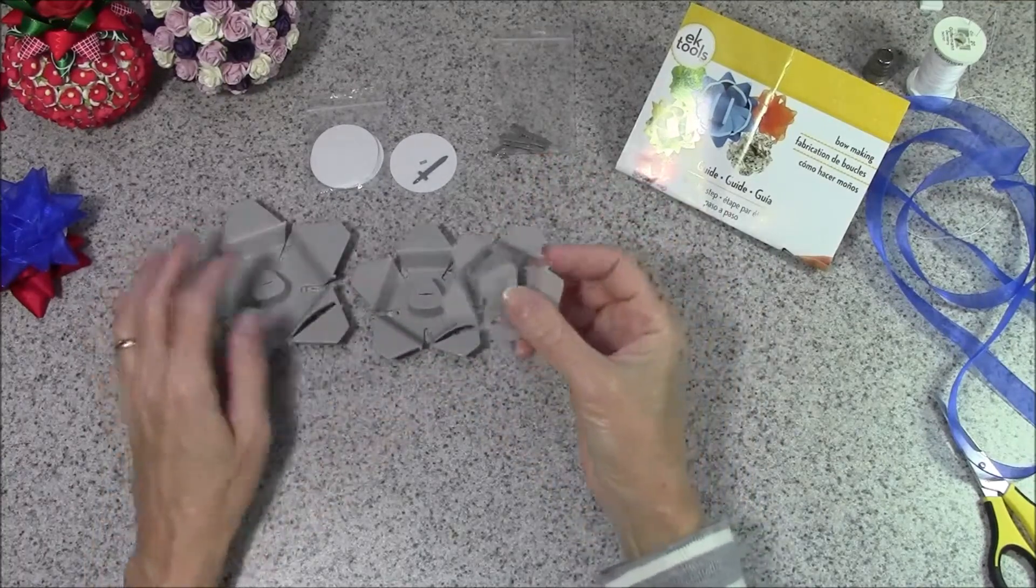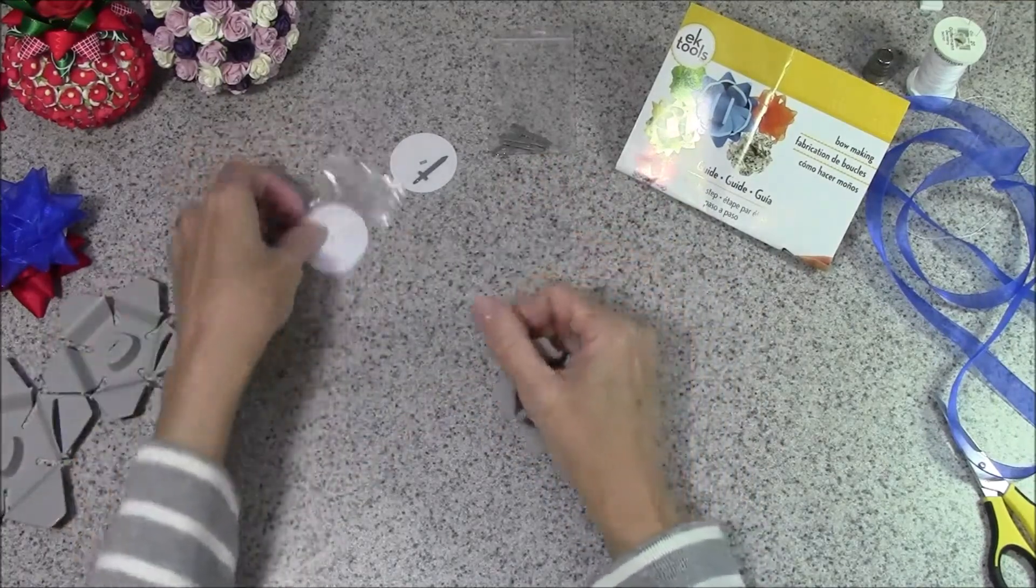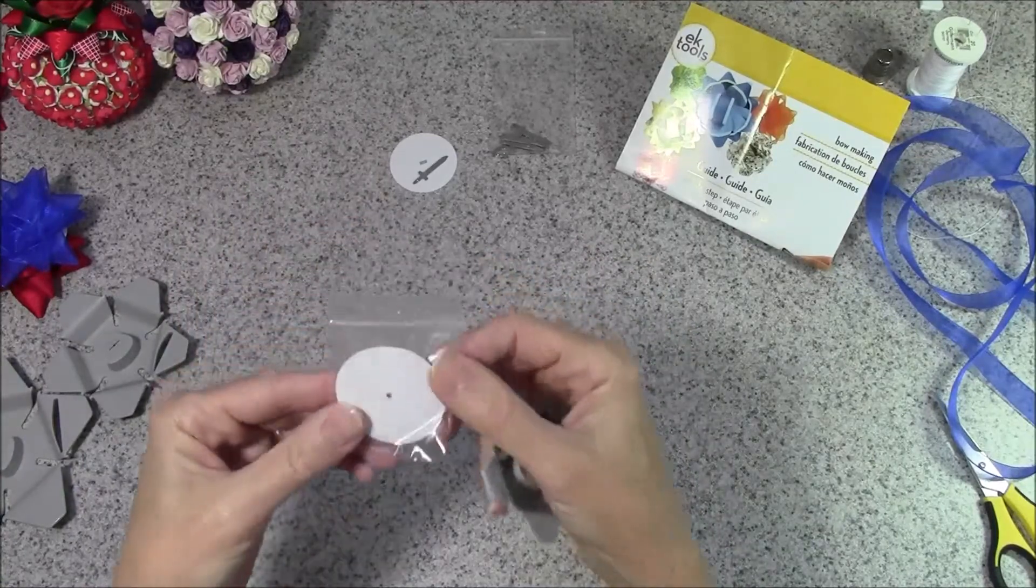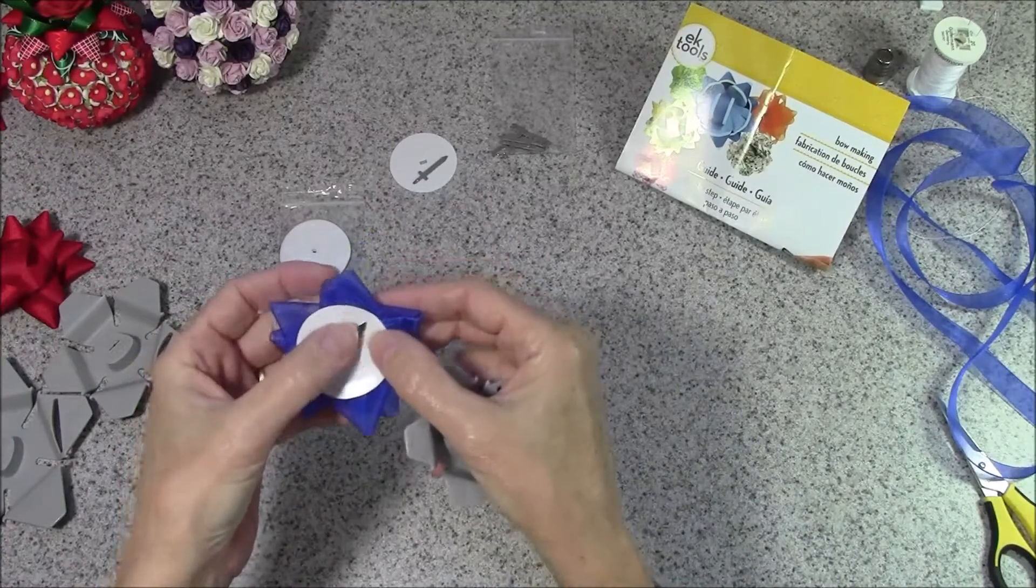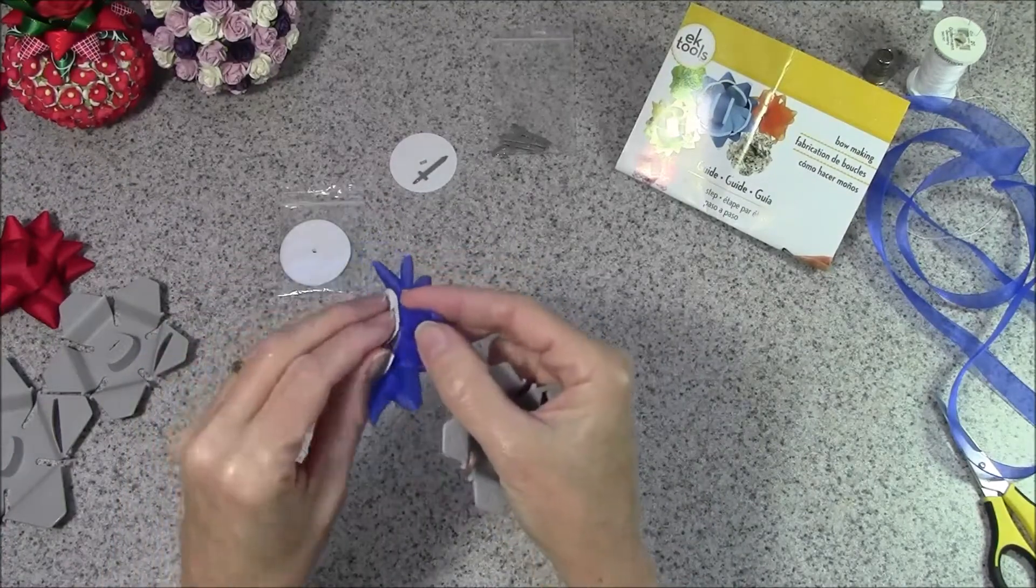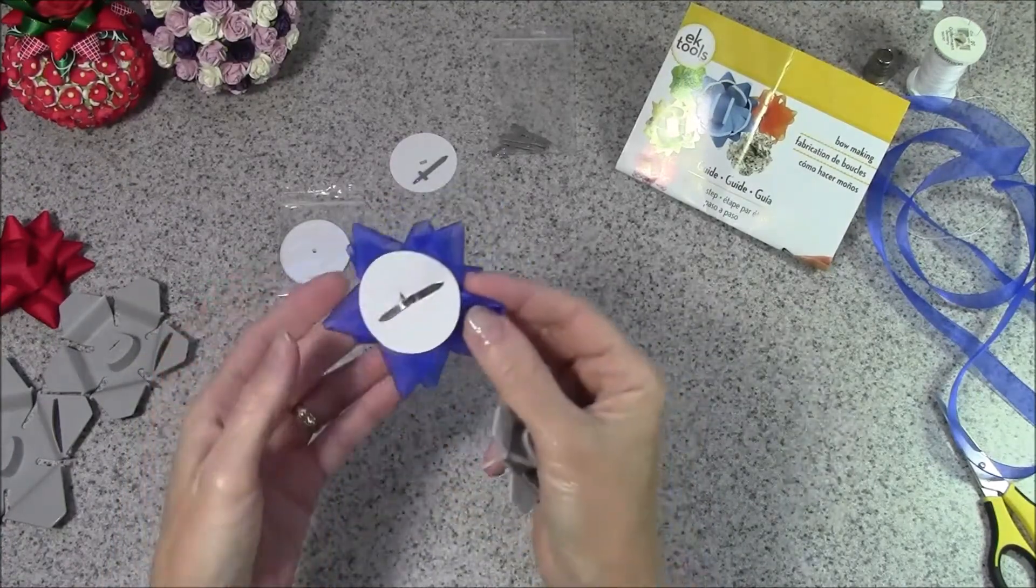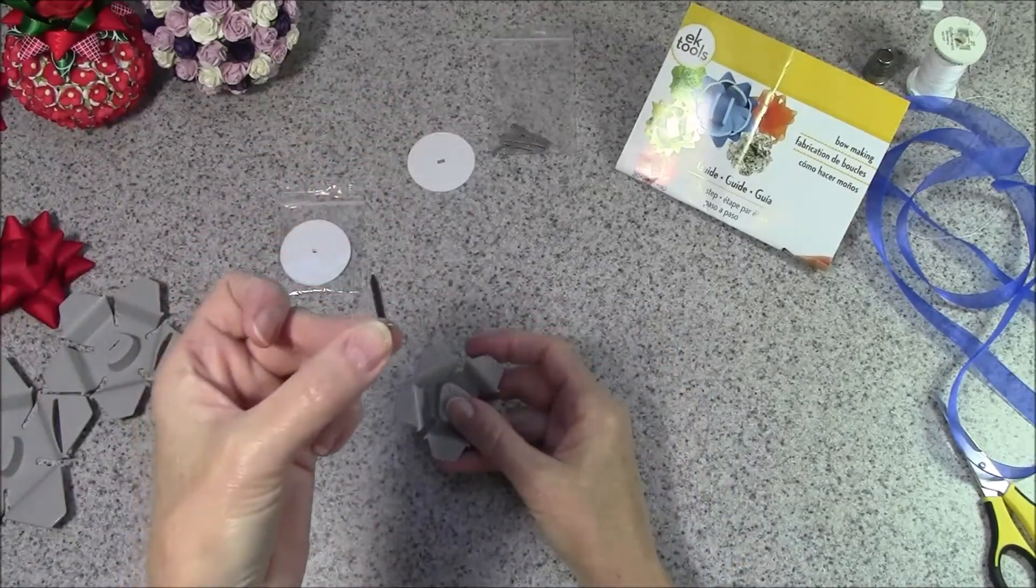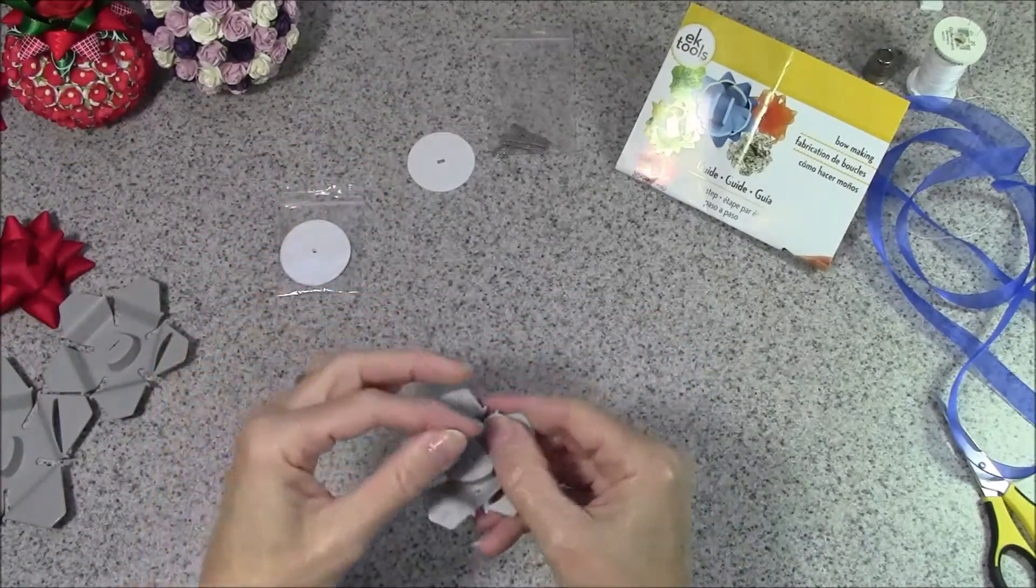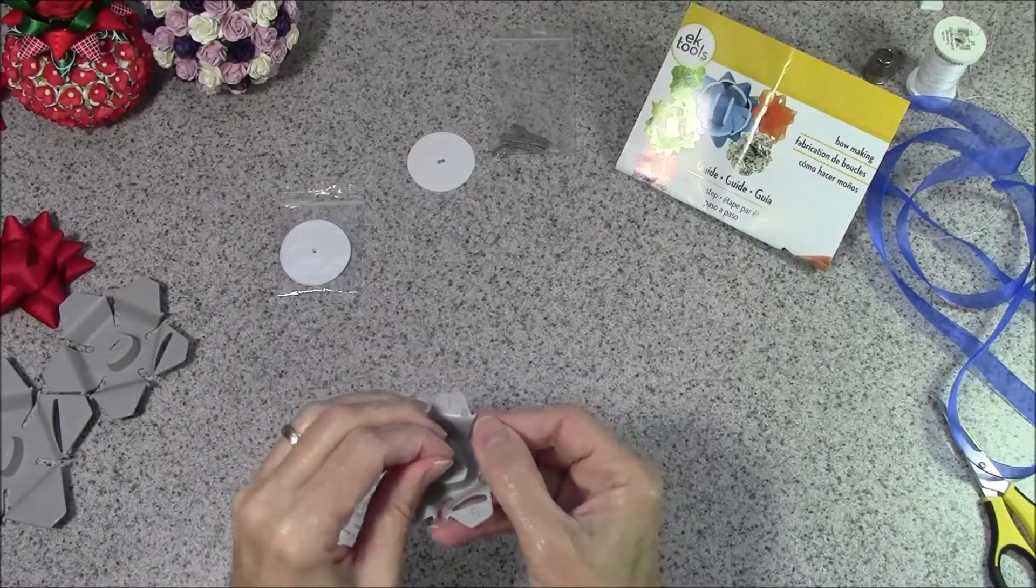The set comes with three different sizes that you can make. I was working with just the small one. It comes with I think 12 of these adhesive backings which is what you're going to put on the back, and then like any gift wrapping bow you peel and then stick it onto your package.